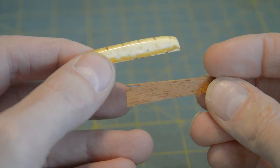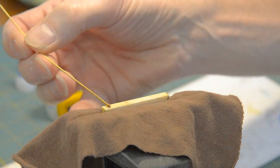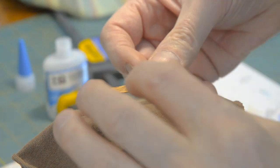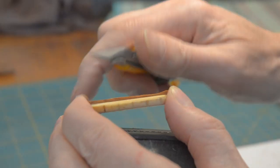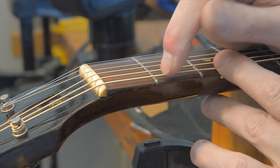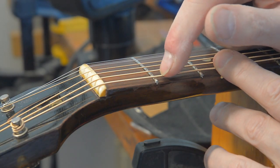I want to retain the original nut. But because the frets are now taller, I'm going to have to add a shim. And now I have to set the nut slots.